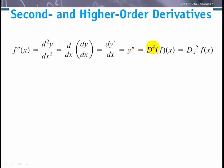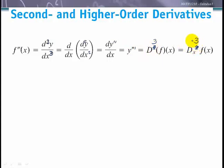We could also denote it as y double prime. Using differential operators, we put a little 2. For a third order derivative, we add another prime — this becomes a 3 in Leibniz notation. We take the second derivative and then take another derivative, giving us three primes, or a 3 in the other notations.